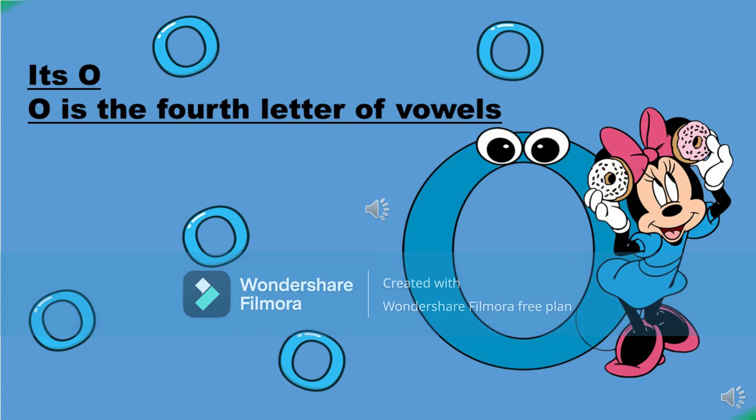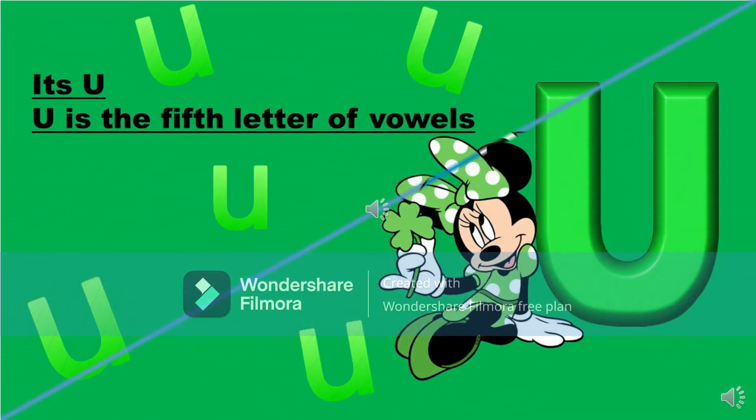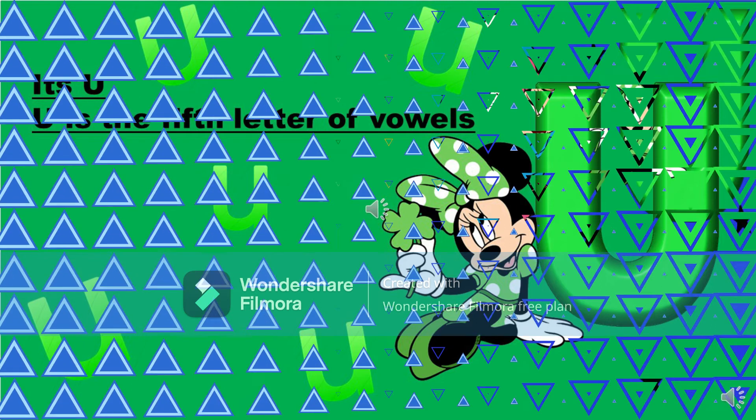It's O. O is the fourth letter of vowels. It's U. U is the fifth letter of vowels.